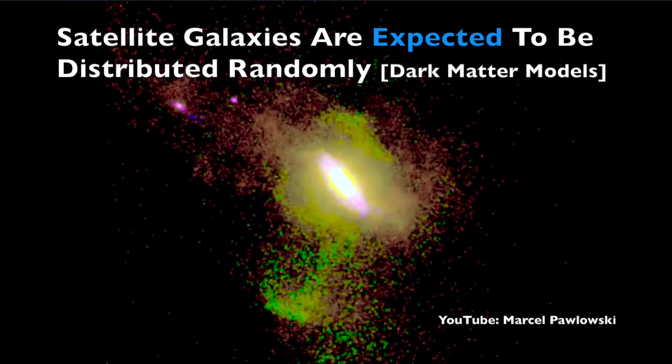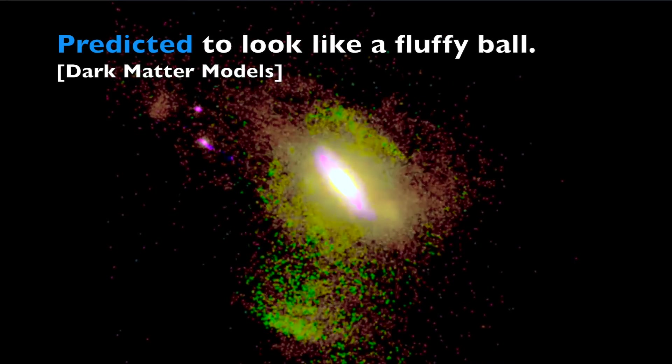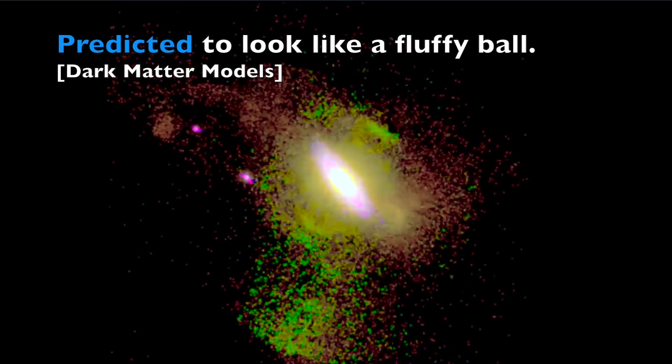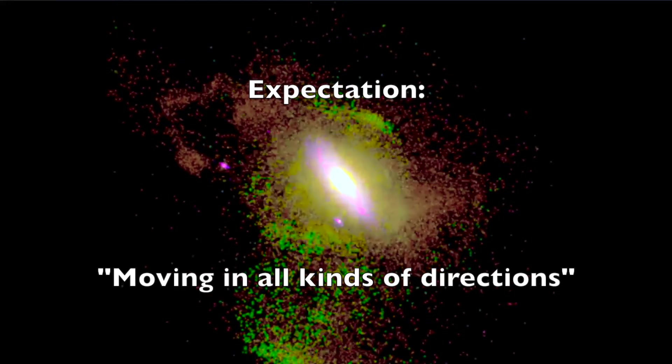If you look at cosmological simulations, you get predictions for where they should be relative to their host galaxy, and it looks more like a very fluffy ball of smaller satellite galaxies moving around in all kinds of directions.